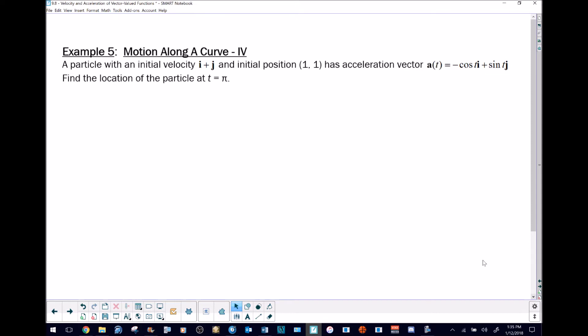In this problem, we are given that a particle has an initial velocity vector of i plus j and an initial position of the ordered pair (1,1). We know we have an acceleration vector a(t) equals negative cosine t i plus sine t j. We are to find the location of the particle at time t equals pi.